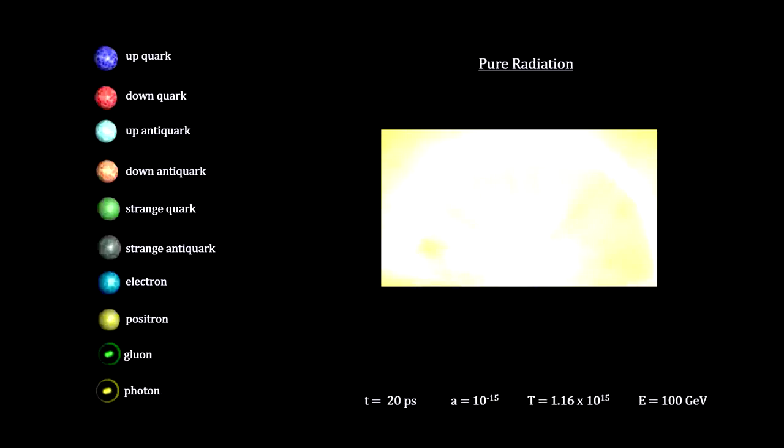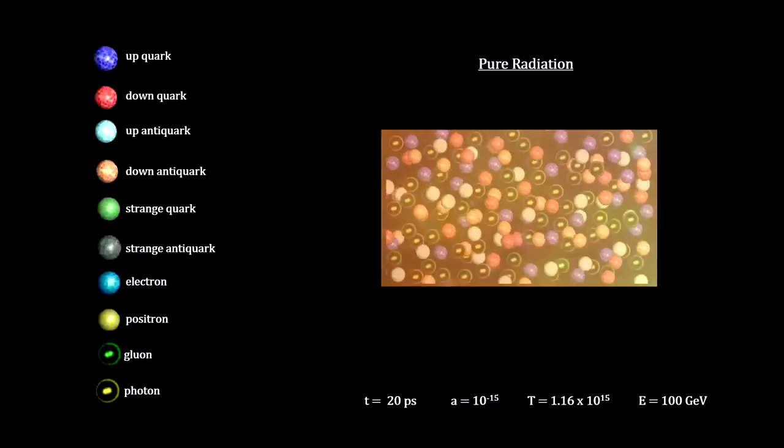If we go back in time to when the universe was only 20 trillionths of a second old, its temperature was over a thousand trillion degrees and photon energy was around 100 gigaelectron volts. At that level, no baryonic matter could survive and all of space would have been filled with pure radiation.